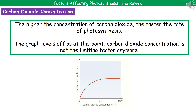Our second limiting factor is the concentration of carbon dioxide. If you look at the graph, you'll notice it looks pretty much the same as the one for light intensity. Initially, increasing the concentration of carbon dioxide leads to a faster rate of photosynthesis. But we hit a point where it then plateaus or levels off, and at that point it just means that carbon dioxide concentration is no longer the limiting factor.